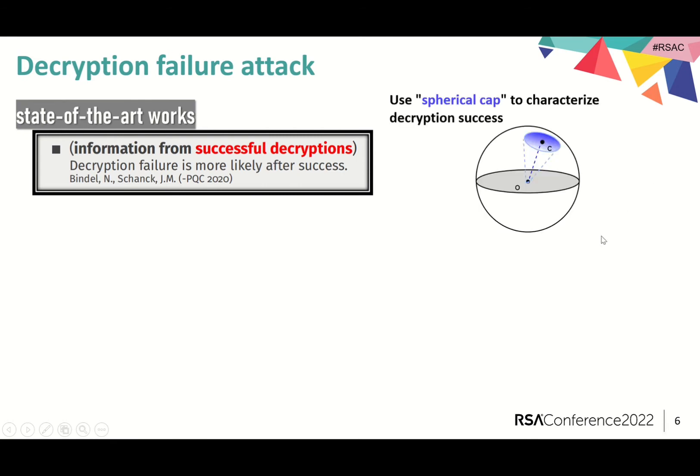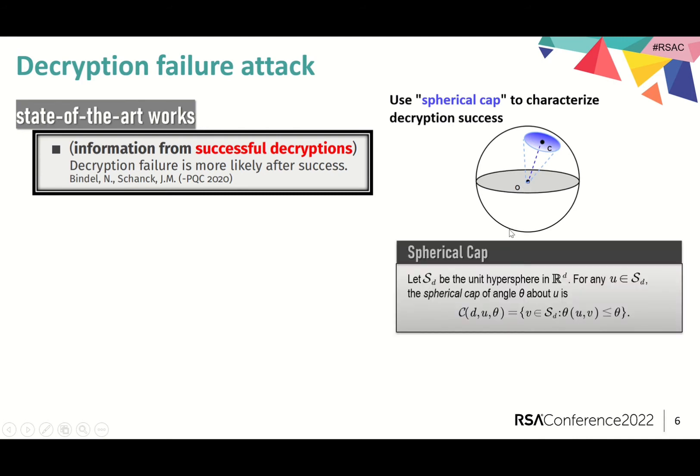This shows the fact that a successful decryption implies that a secret stays away from certain spherical caps above C. The definition of spherical cap is given here. Let S_d be the unit hypersphere in the d-dimensional space R^d. For any u belonging to S_d, the spherical cap of angle theta above u is C_d(u, theta) as here.